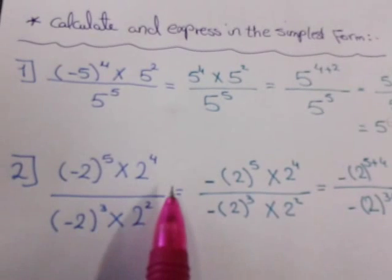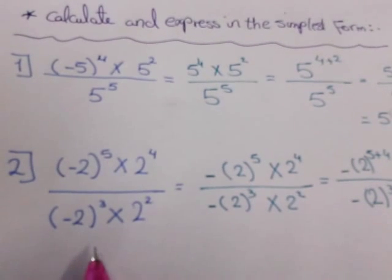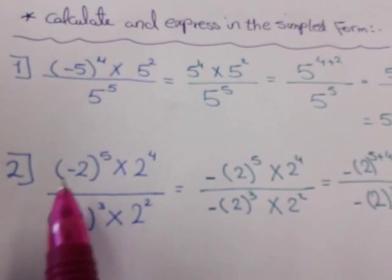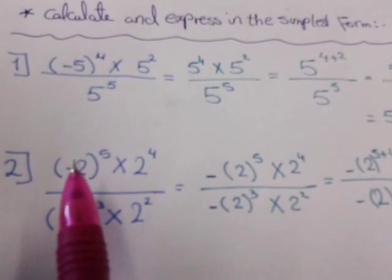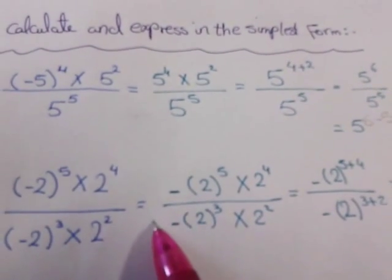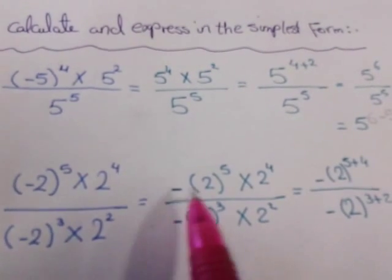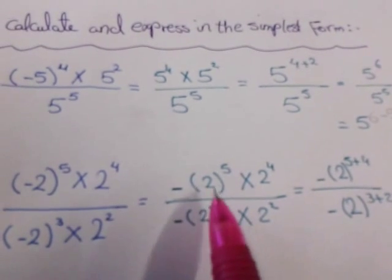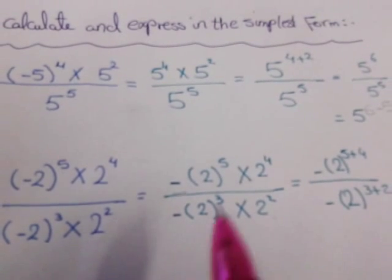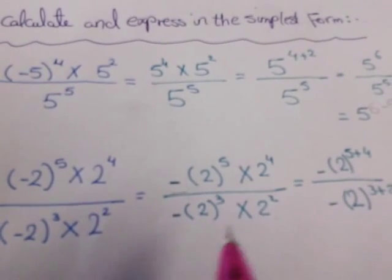Number two: negative two all to the power five, times two power four, over negative two all to the power three, times two power two. Here I have a negative sign but the power is odd, so the odd power sends the negative sign out. I write the negative sign here, with two in brackets to the power five, times two power four.